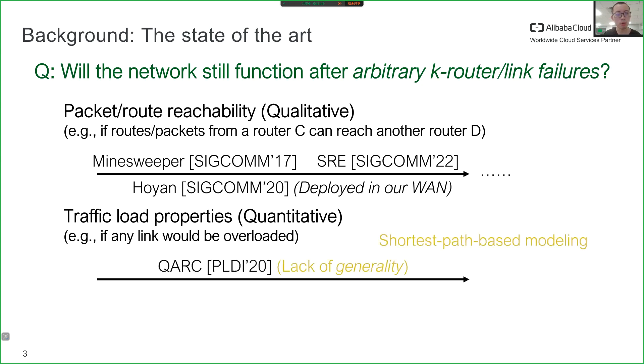QARC, published at PLDI '20, lacks generality because its shortest path-based modeling cannot be easily extended to support the complex protocols used in WAN. Our previous work, Jingubang, lacks efficiency because it needs to enumerate all possible failure scenarios.